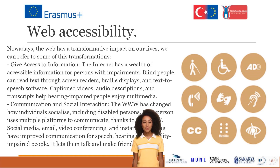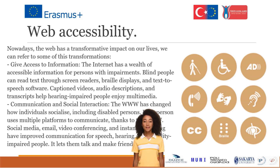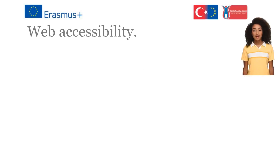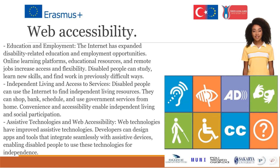Communication and social interaction: the WWW has changed how individuals socialize, including disabled persons. Each person uses multiple platforms to communicate — social media, email, video conferencing, and instant messaging — which have improved communication for speech, hearing, and mobility-impaired people, letting them talk and make friends. Education and employment: the internet has expanded disability-related education and employment opportunities. Online learning platforms, educational resources, and remote jobs increase access and flexibility. Disabled people can study, learn new skills, and find work in previously difficult ways.